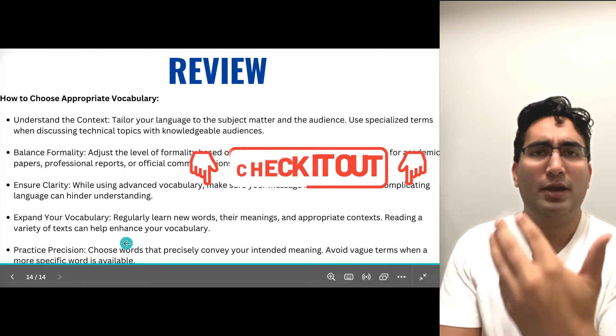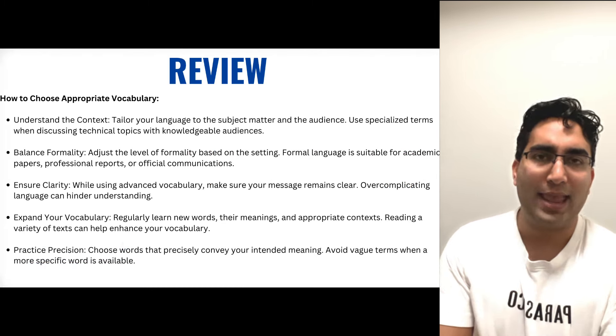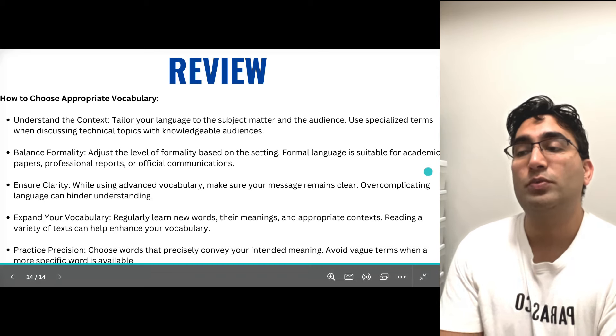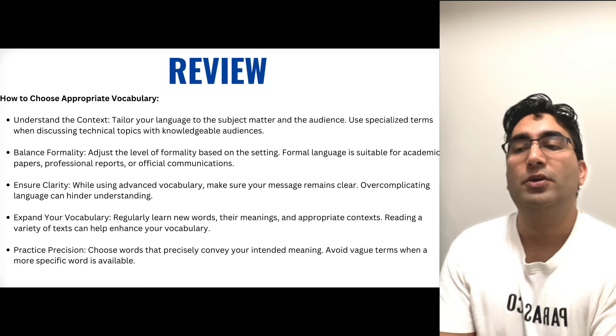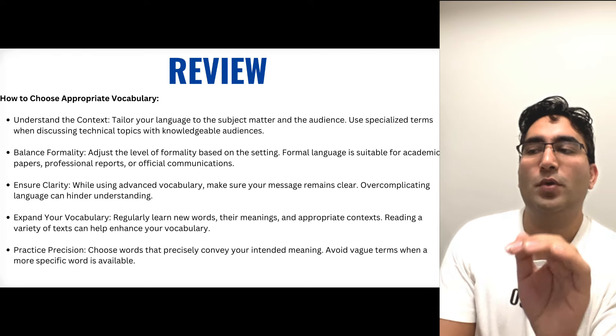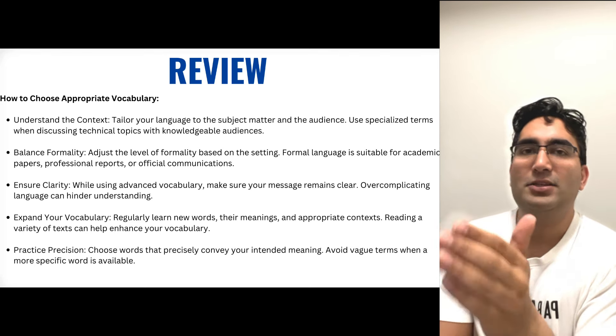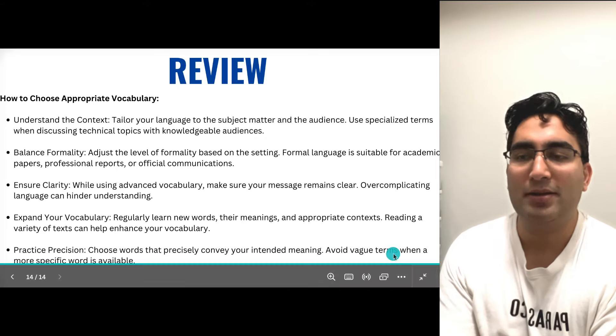Also keep learning vocabulary wherever you can — with word lists, TV shows, and movies. Practice precision: choose words that precisely convey your intended meaning and avoid vague terms when you have a more specific word available. If you are using vague words that confuse the meaning and make the sentence incorrect or inappropriate, you lose marks. The best way to rule this out is to comment below and submit your writings in the comments — I'll give you feedback and try to answer every comment, completely free. Then you'll know your score and know if you need more preparation.